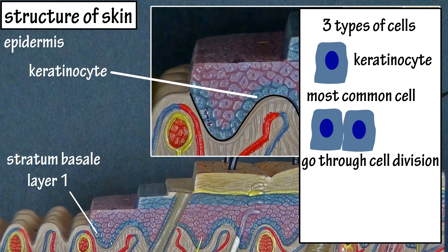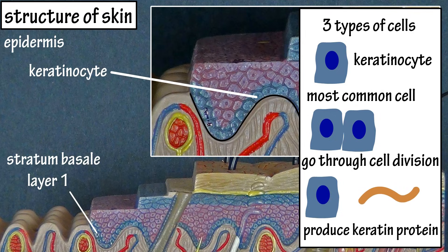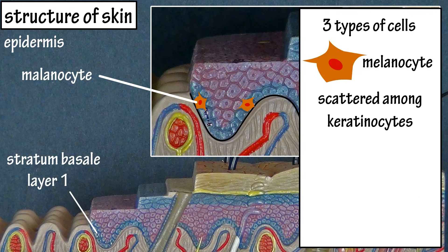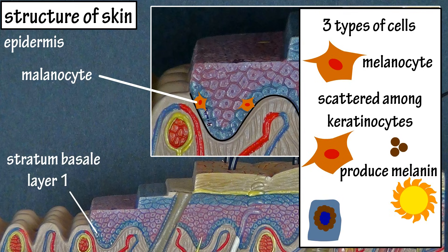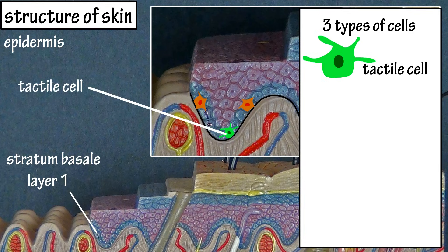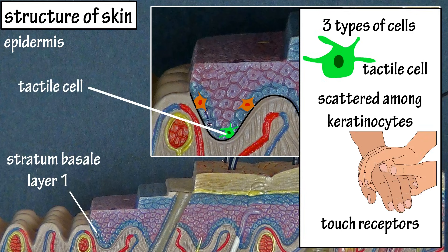Keratinocytes can produce a tough structural protein called keratin, which strengthens the skin and makes it almost waterproof. Melanocytes are scattered among the keratinocytes and they produce the pigment melanin in reaction to exposure to ultraviolet light. Melanin gets transferred to keratinocytes and surrounds the nucleus to protect DNA from mutating from ultraviolet radiation. Tactile cells are also scattered among the keratinocytes and they serve as light touch receptors.